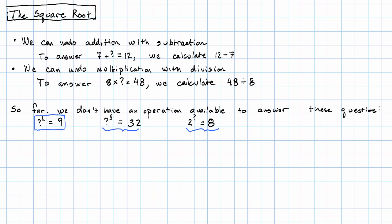So suppose we want to ask, what number to the second power gives me 9? There are two possible answers to that question. Just by trial and error, we see 3 to the second power. That's 3 times 3. That's 9.